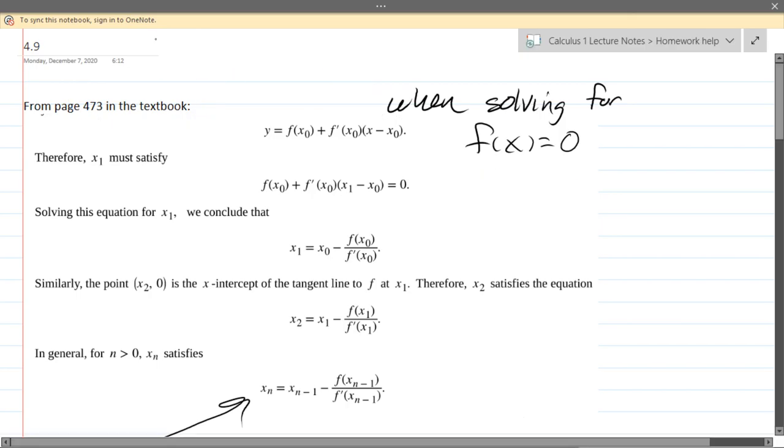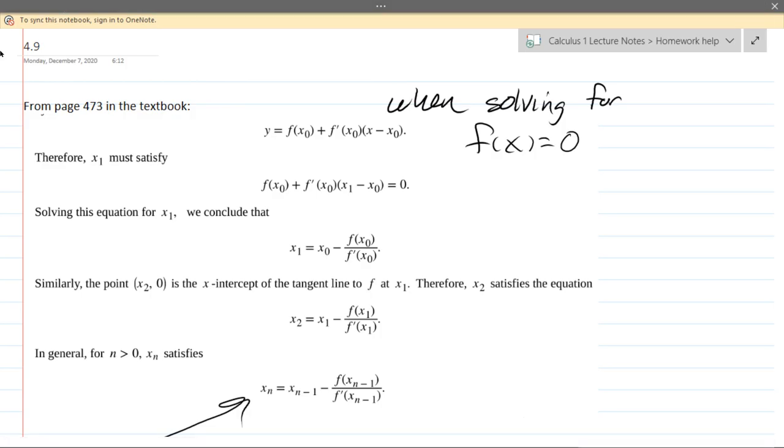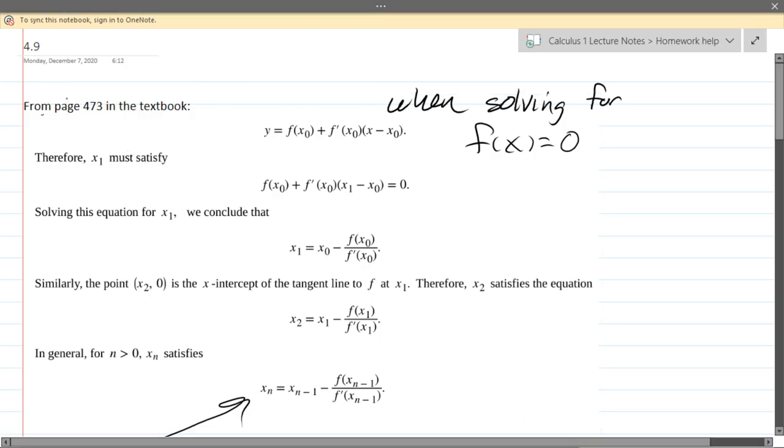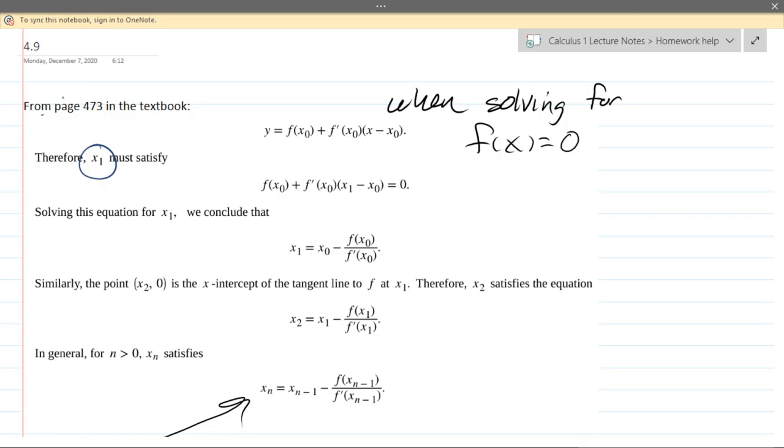What's not written down is you're going to use this when solving for your function f of x equals 0. And the way you're going to do it is you're going to linearize. And how do we do that? Well, first, you need to have an x1, an x-coordinate, an x-value that's close.